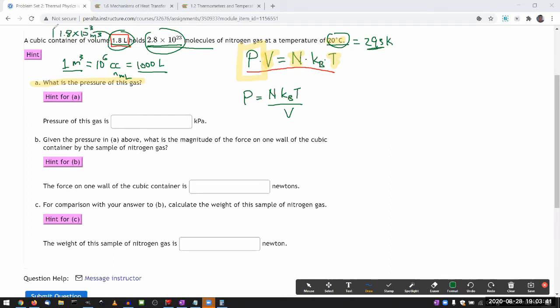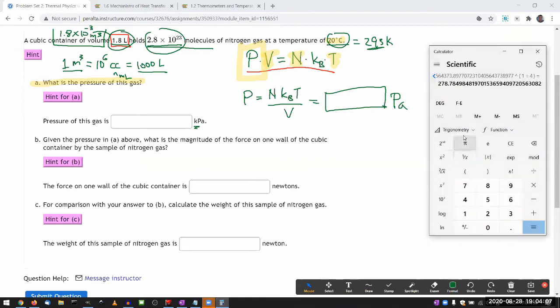So once you do all this unit conversions and plug in the numbers in correct units, you will get the correct answer in pascals. And that's where you have to kind of look at the question and notice that it's asking in kilopascals and not to convert it from pascals to kilopascals. So let me do that calculation quickly and get an answer and plug it in. It's kind of why we're using this annotation thing.